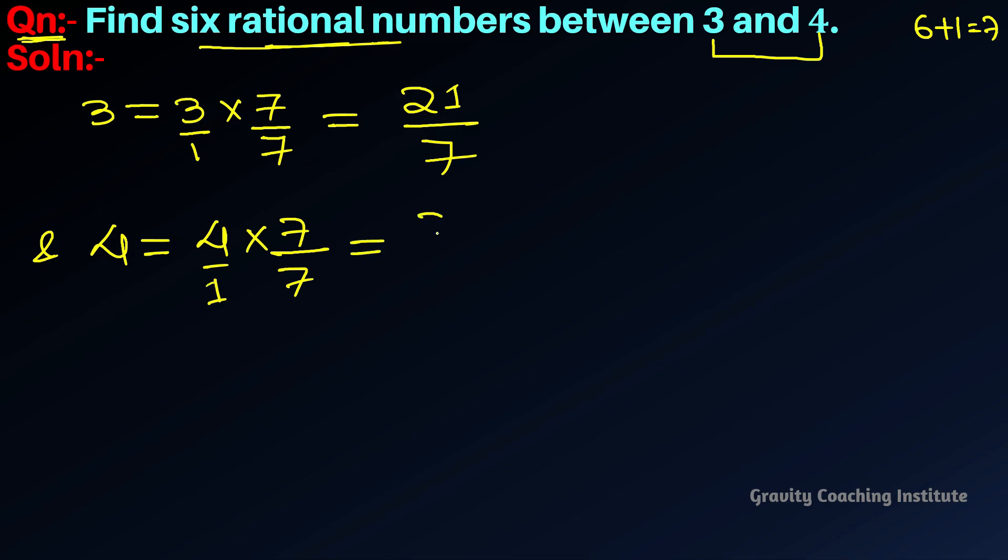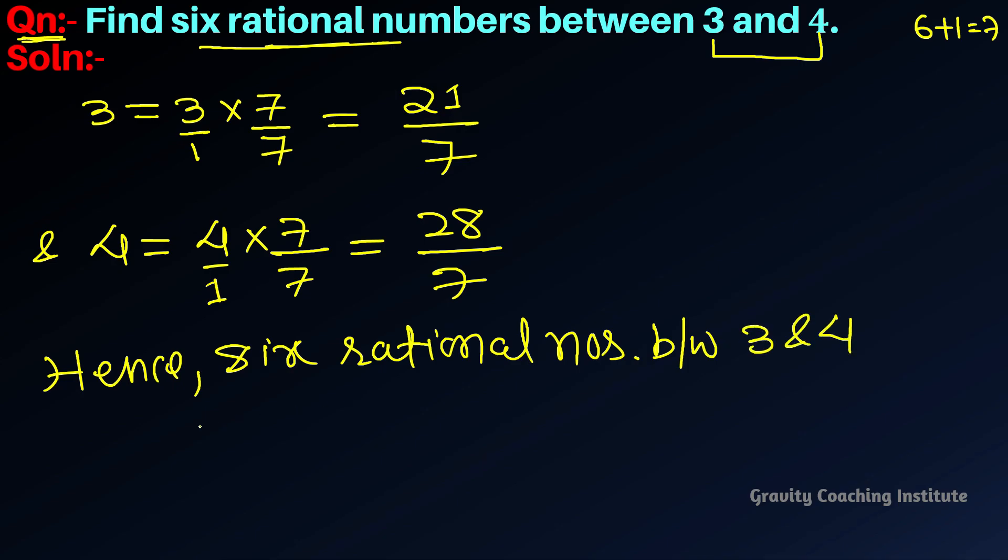So, we have got twenty-eight upon seven. Hence, six rational numbers between three and four are twenty-two upon seven,